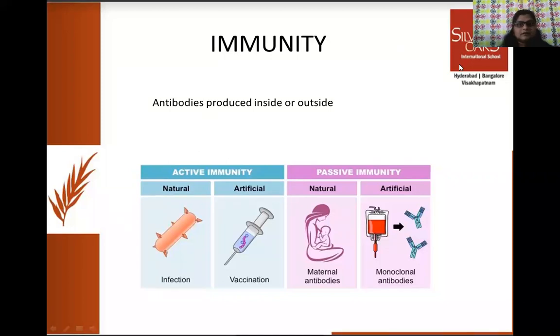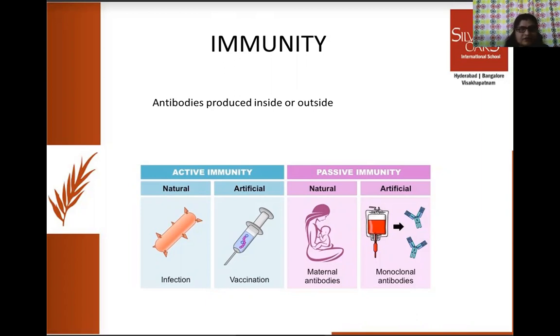Today we are going to learn about the types of immunity based on the antibodies produced inside the body or outside the body. Our immunity can be distinguished into active immunity and passive immunity. If antibodies are produced inside the body, that is active immunity; if produced outside, it is passive. So if any antigen is invading or attacking our body, antibodies will be produced against it — and this can be induced artificially also.